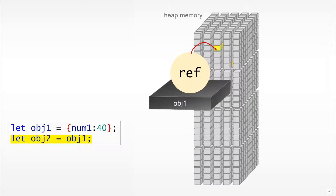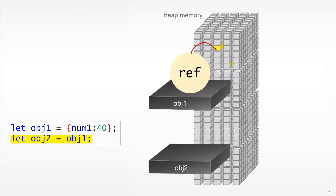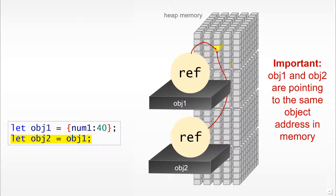Now, what if we have the second line of code: let object2 equal to object1? In this case, we will define a second variable, object2, and we would add a reference to it. The value of the second variable would simply point to exactly the same address location. Notice the object itself is stored in heap memory — we are not touching it in any way when we define variables; we are simply pointing to the correct location. So importantly, object1 and object2 are pointing to the same object address in memory.